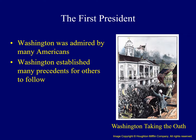Washington was the most admired man in 18th century America. Even before the Constitution was ratified, his name was widely proposed for the presidency. This painting captures the enthusiasm of the crowd gathered to see their hero take the oath of office. Because he served as the nation's first president, each step he took would serve as a model, or precedent, for those who would follow.